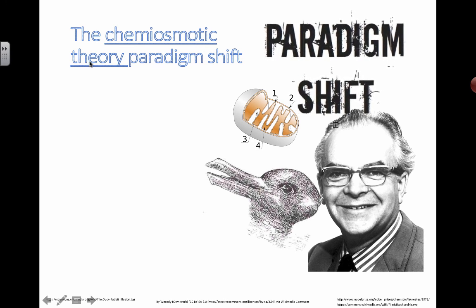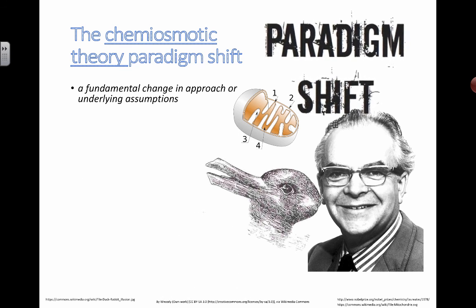Remember, in science we still tend to call things theories, but a theory in science is very different from a theory in everyday life. It's the best explanation based on the evidence, and so the chemiosmotic theory has become well accepted by scientists and has led to new ways of thinking about diseases related to problems with the mitochondria. This paradigm shift actually happened quite a while ago.